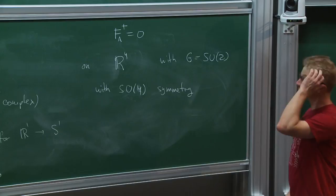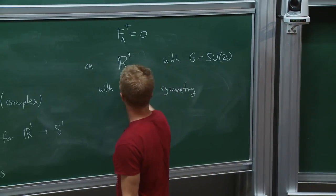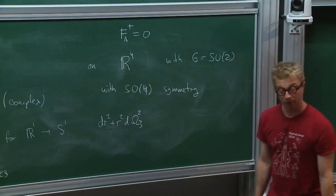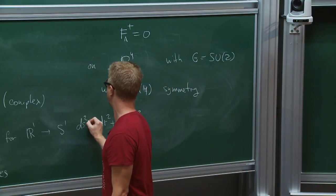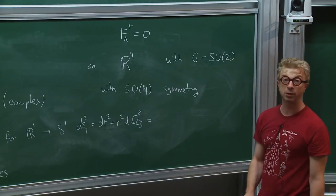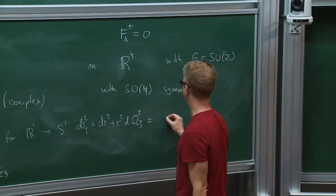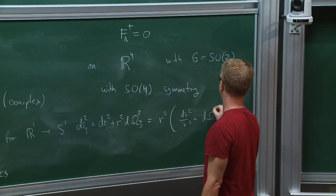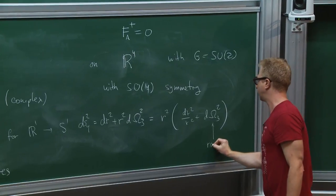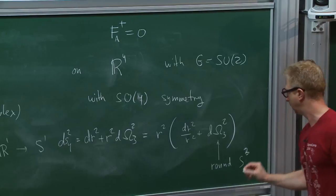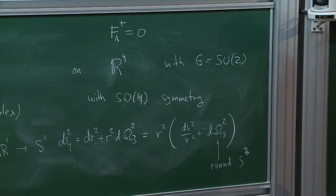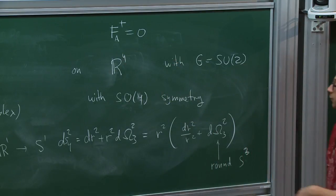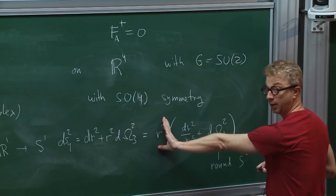Taking gauge group SU(2) and writing the metric on R4 in spherical coordinates, you see that this metric is conformally equivalent to the metric on S3 times the real line. The self-duality equations are conformally invariant — as you're supposed to find in the exercises — so a solution on flat space is also a solution on that conformally equivalent space.